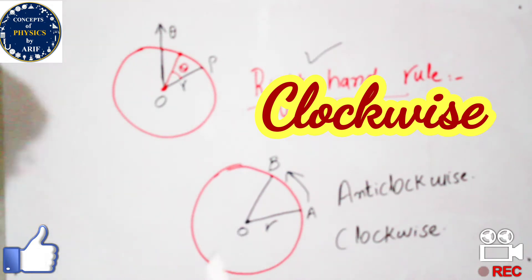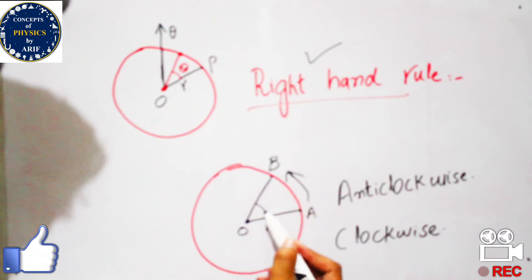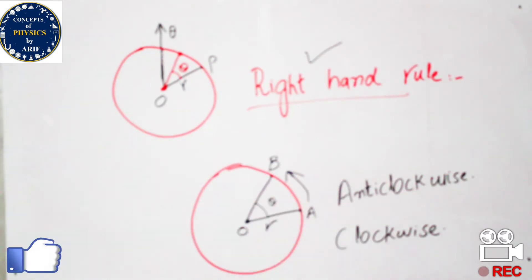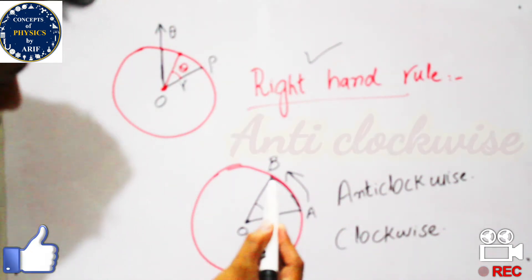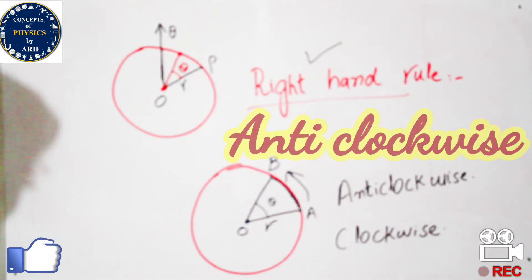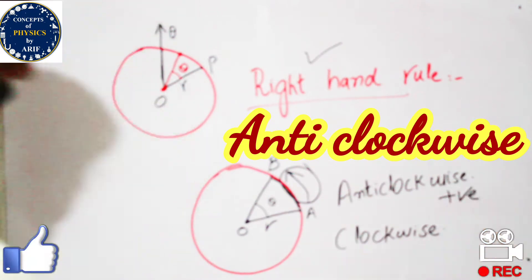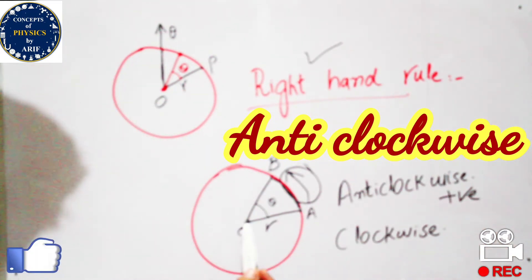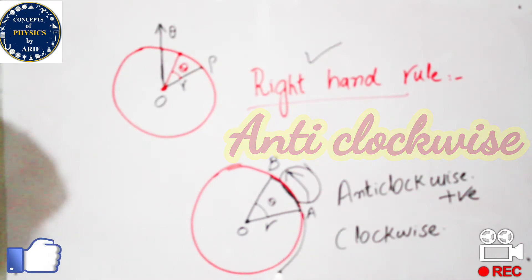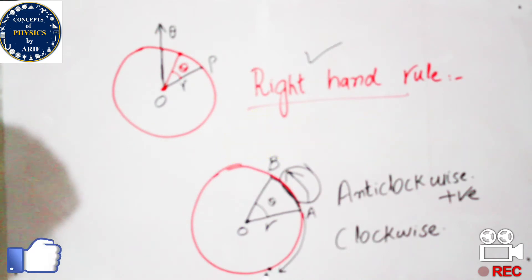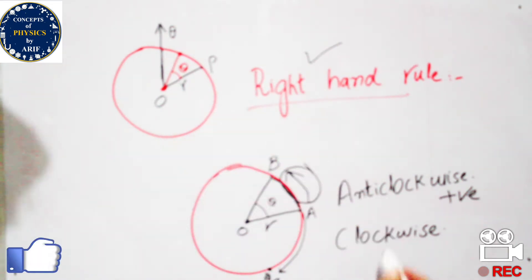We need to understand how the body is moving. If the body is moving in the anticlockwise direction, the angle between them is theta, and this angle is known as angular displacement. For the anticlockwise direction, the angular displacement is positive. For the clockwise direction — for example, when a body starts from point A and covers some distance to point B or C — this is clockwise and it is a negative angular displacement.